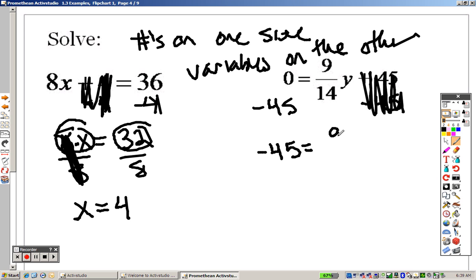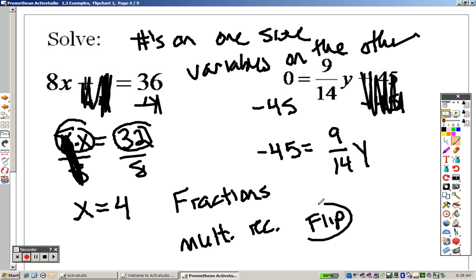On this side, I have a 9 over 14y left over. Now, whenever you have fractions, to get rid of fractions, you want to multiply by the reciprocal. And the reciprocal is you flipping it. That's all it is. You flip it. So that means we're going to multiply both sides by 14 over 9.